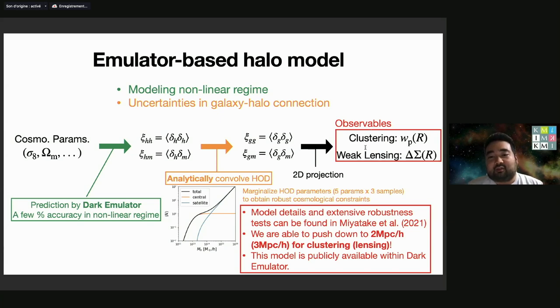After 2D projections, we get these observables. The point is that we combine analytically HOD, and then we can marginalize HOD parameters to obtain robust cosmological constraints.